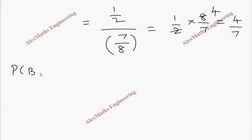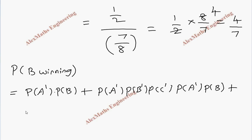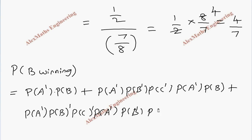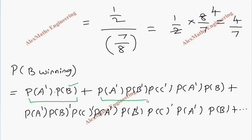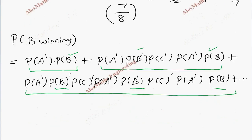At the same time, we are looking for P of B winning, with A still starting. So when A starts, he should not win, then chance comes to B and B wins. Otherwise: A starting not winning, B getting chance not winning, C getting chance not winning, again A not winning — then when B gets a chance, he wins. Or further: A not winning, B not winning, C not winning, A not winning, B not winning, C not winning, again A not winning, then finally when B gets a chance, he wins. Like this it goes. The difference is B is winning in the first trial, second trial, third trial and so on.